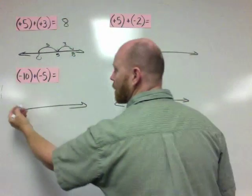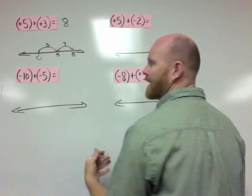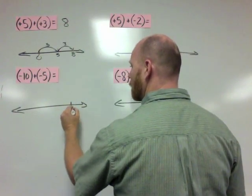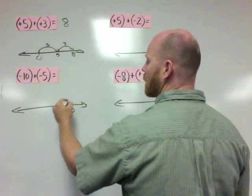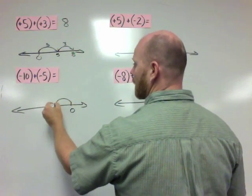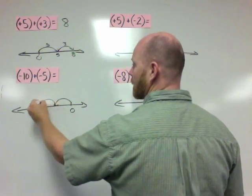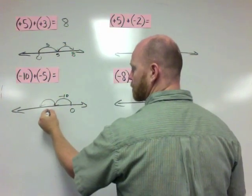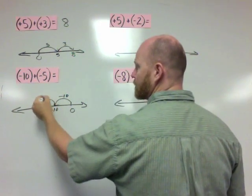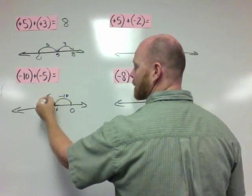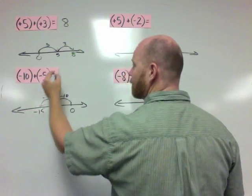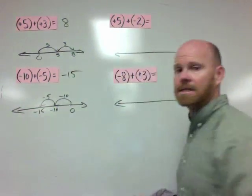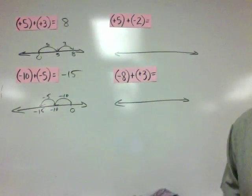Down here, negative 10 plus negative 5 means we're going to start at 0, hop to the left 10, then hop to the left 5. The first hop puts us at negative 10, the second hop puts us at negative 15. So the answer is negative 15.